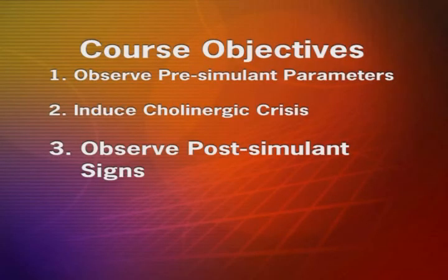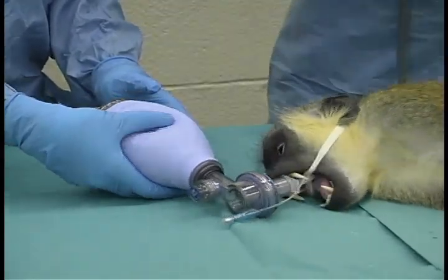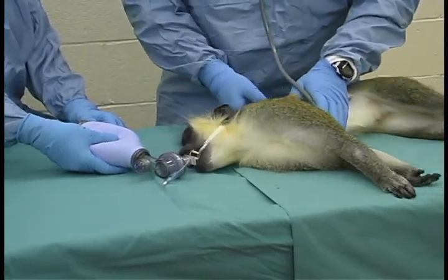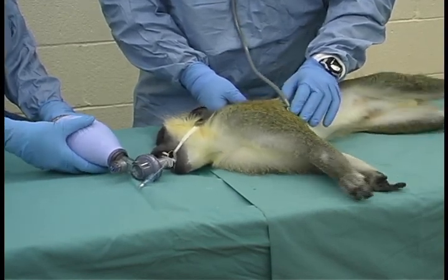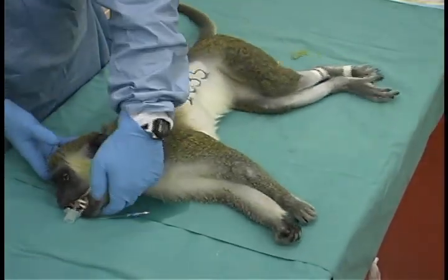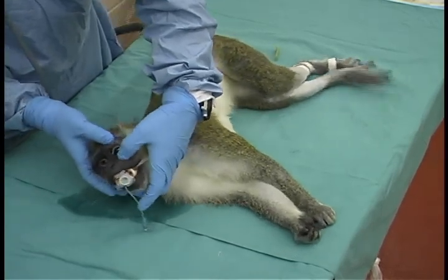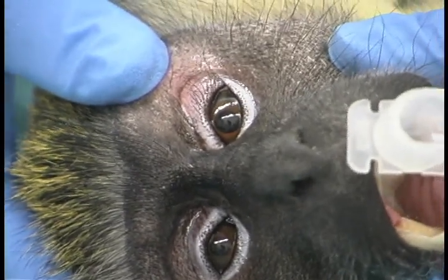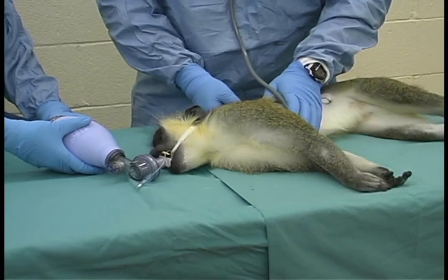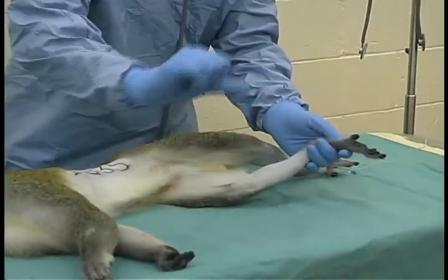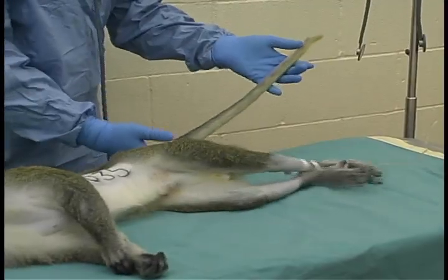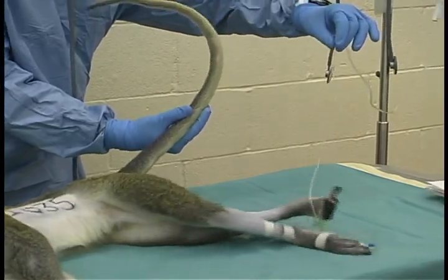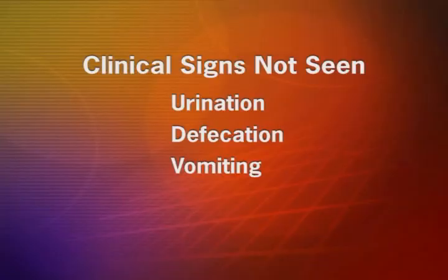Objective three is to observe the post-simulant clinical signs. The onset of clinical signs will be nearly immediate after the administration of physostigmine. A dramatic drop in heart rate will occur but it will be brief. Onset of muscular fasciculations will make the heart rate rapidly rise again. At this point you'll start to see clinical signs of a cholinergic crisis: profuse salivation beyond that induced by ketamine anesthesia, changes in pupil size, increased pulmonary resistance using the Ambu bag, sweating on the palms and soles, increased muscle tone in the abdomen, rear legs, and tail, and possible seizure activity. Clinical signs not seen in this laboratory will be urination, defecation, and vomiting, because the animals were fasted due to the use of anesthetic ketamine.